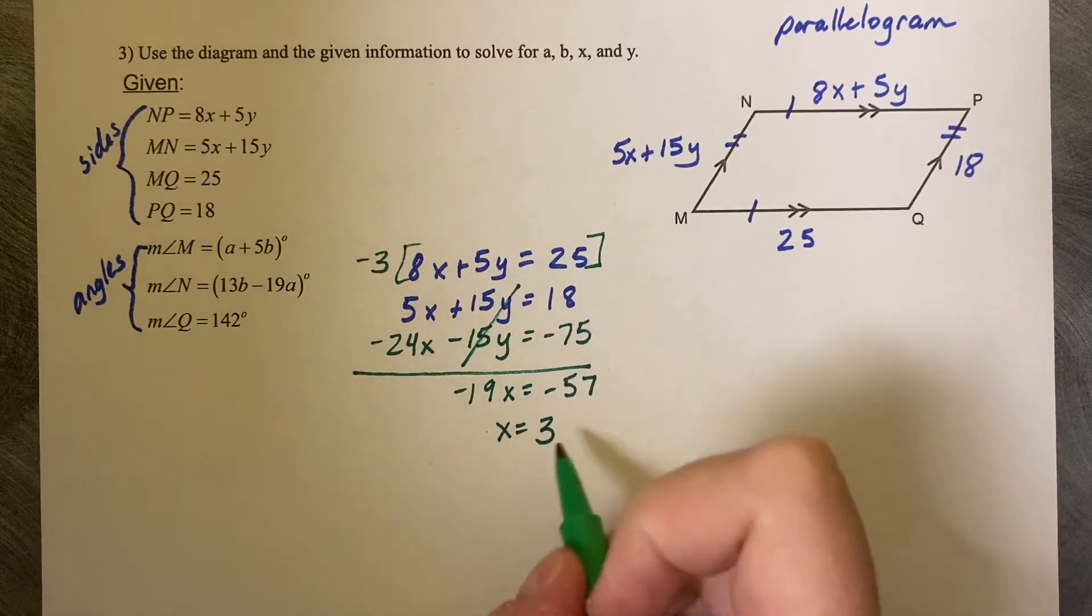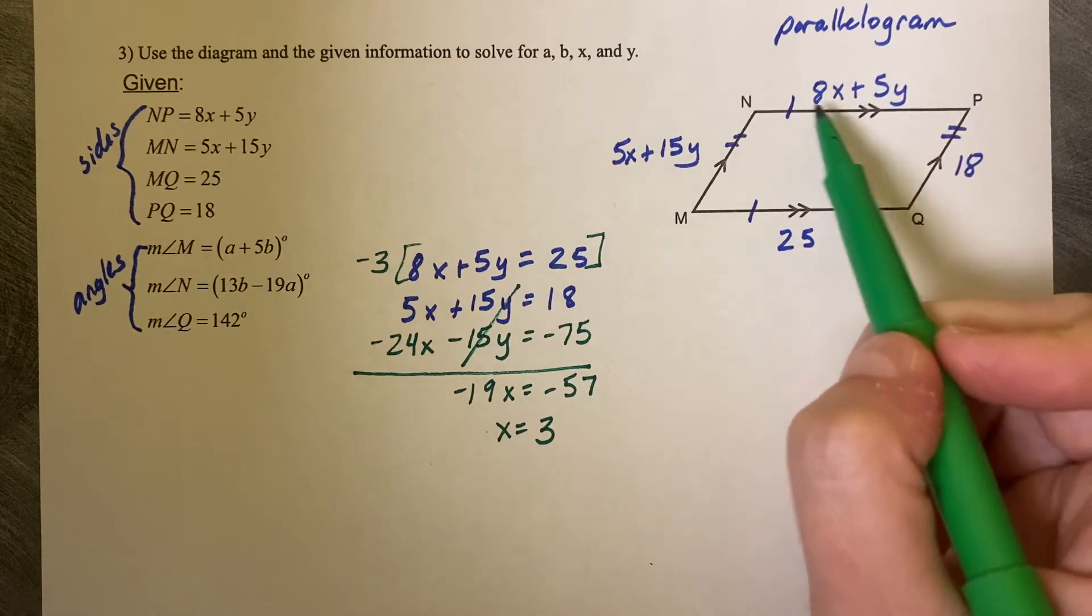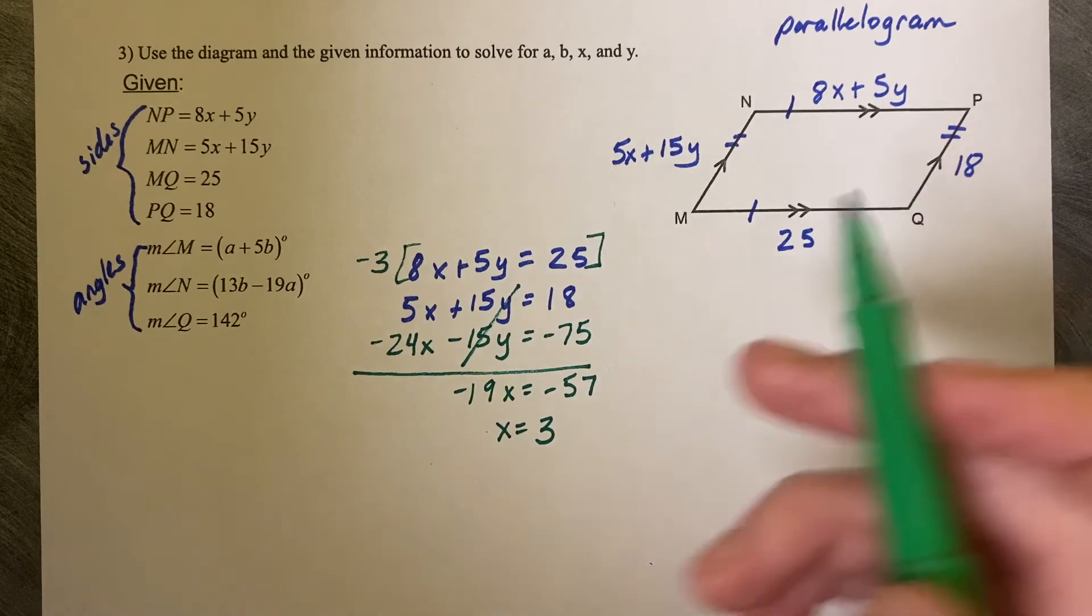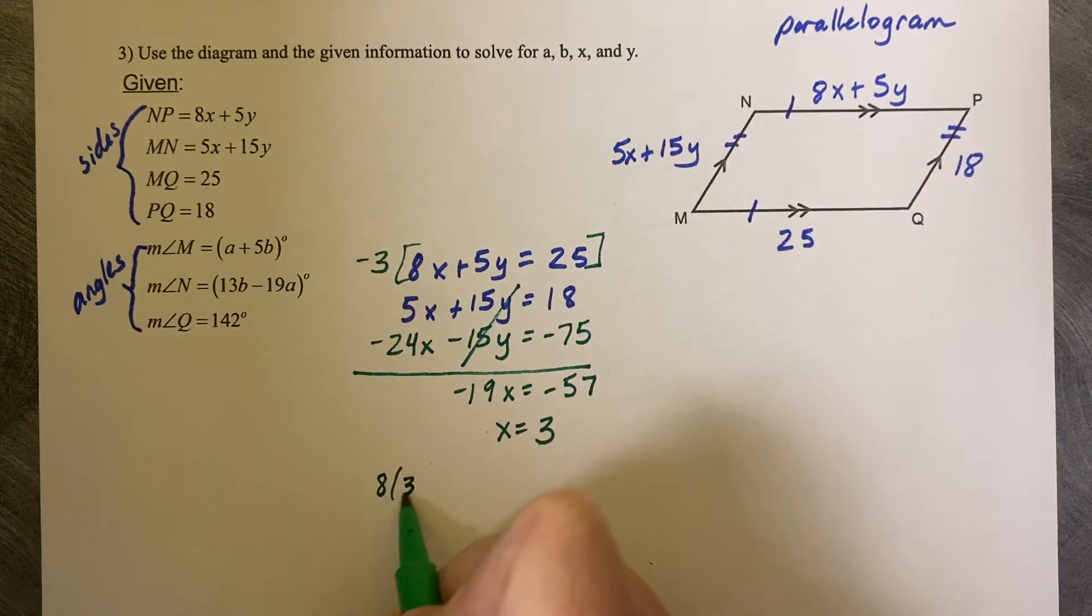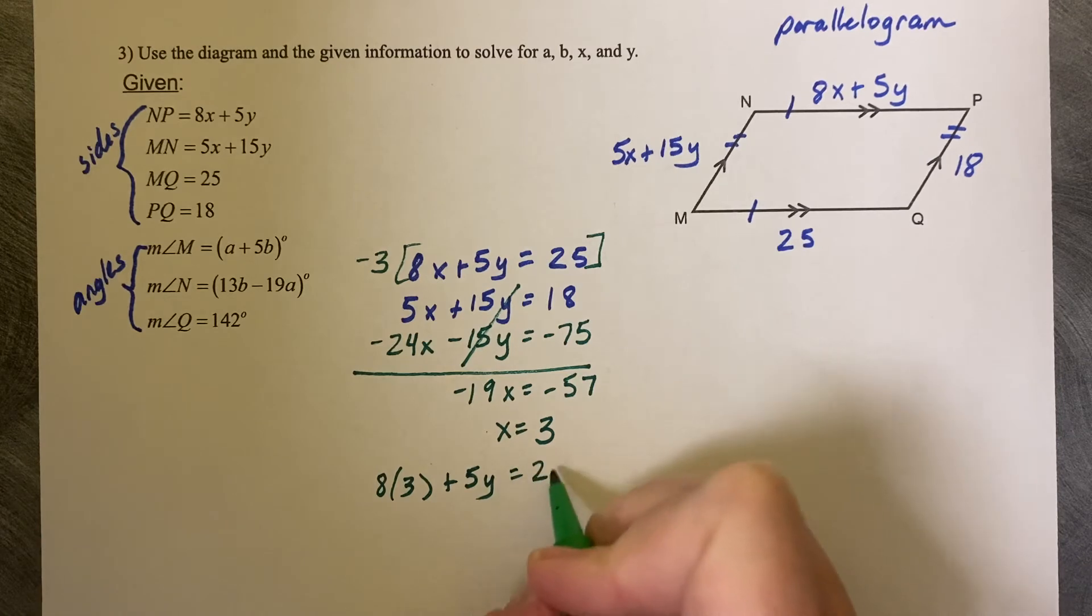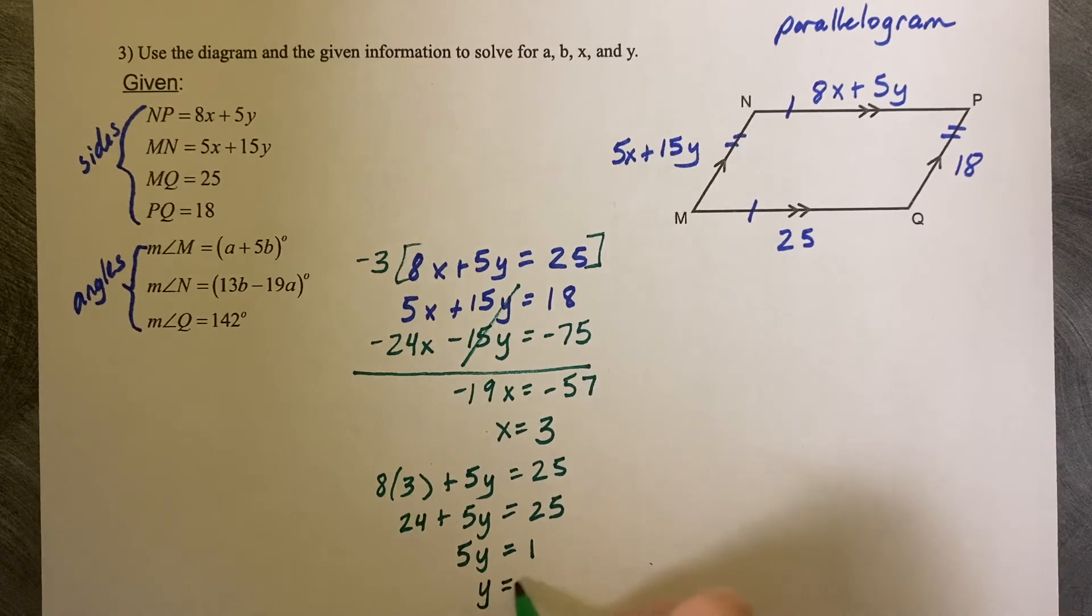So we've got one of the variables. We've got X. So now all we need to do is plug this X into one of these expressions to get the value of Y. Whichever one looks more friendly to you, I'm just going to choose this one. 8 times 3 plus 5Y equals 25. 24 plus 5Y equals 25. 5Y equals 1. And so Y equals 1 fifth. X equals 3, Y equals 1 fifth.